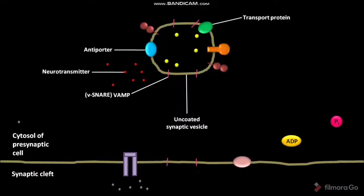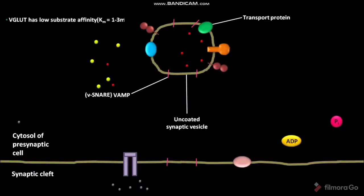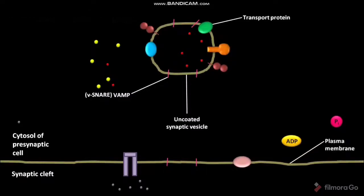The neurotransmitter like glutamate passes through the antiporter called V-glut. At the same time, the proton or H+ ion present in the lumen of the uncoated synaptic vesicle passes into the cytosol of the presynaptic cell, while neurotransmitters like glutamate pass into the lumen of the uncoated synaptic vesicle. The V-glut has low substrate affinity, having a Km of 1 to 3 millimolar. This is the plasma membrane of the presynaptic cell.